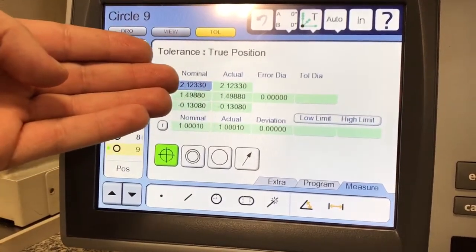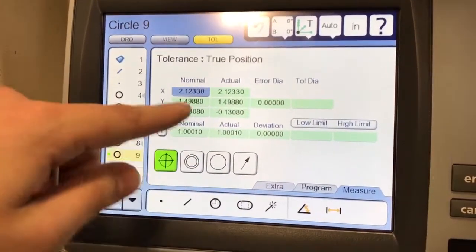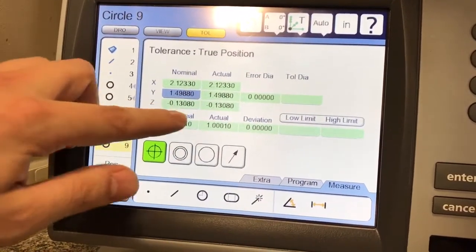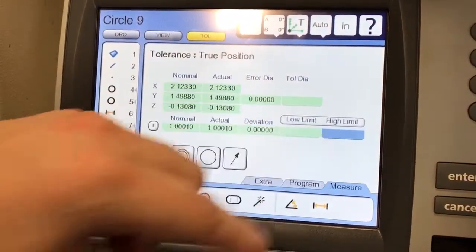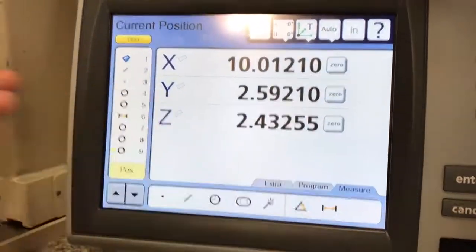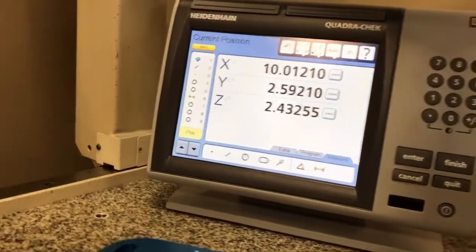As you can see, it comes up to true position, and you can go through these. You can touch right here and set all your nominals, and you can even set your lower limits and high limits, and so forth. And you can press finish and quit, and it will go back to your main screen.